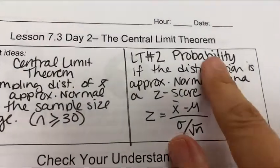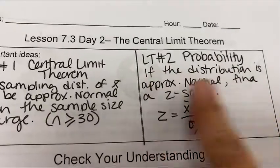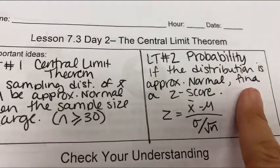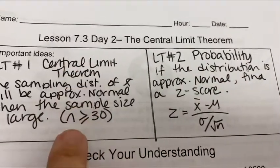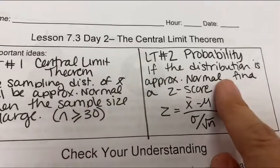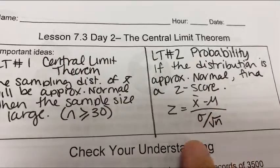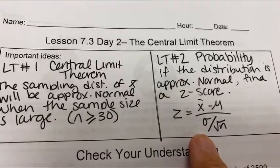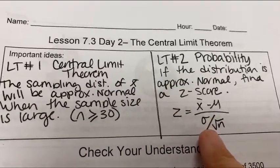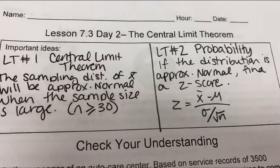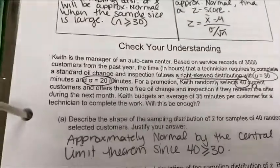So what was the other learning target? Well, we can use probability if the distribution is normal. So when n is greater than 30, we know we can use normal distribution. And this is the formula the calculator is using. It's using the standard deviation of the sampling distribution.